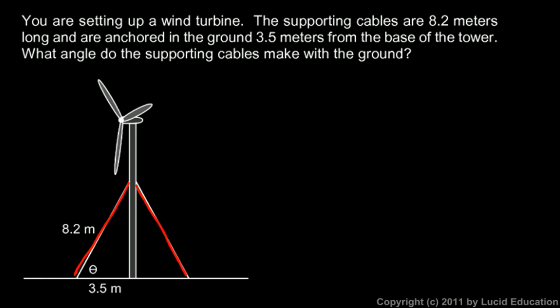The cables are anchored in the ground 3.5 meters away from the base of the tower, and we see that there. So 3.5 meters is this distance. We have a right triangle here, assuming the ground is horizontal and the pole is vertical—pretty reasonable assumptions. That's a right angle, and we want to know the angle theta. What angle do the supporting cables make with the ground? So we're looking for theta.